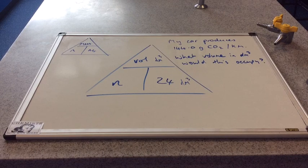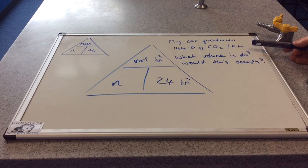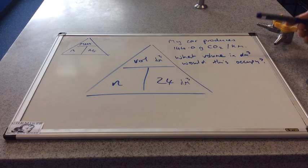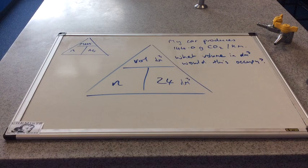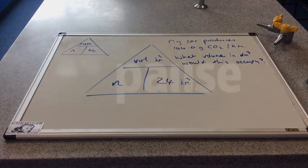So we'll go back to some information I used at the end of the moles and masses video, and it's about the car that I drive. It produces 144 grams of carbon dioxide every kilometer. So we're asked what volume in decimeters cubed would this carbon dioxide occupy? I've got both formula triangles on the board for you now. So again, pause the video, have a go, and then press play and see if you got it right.